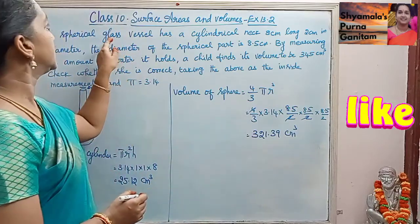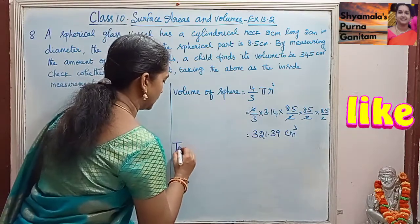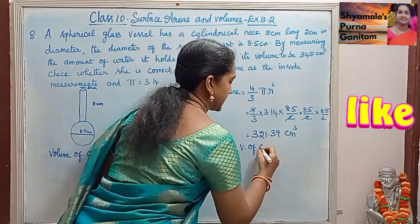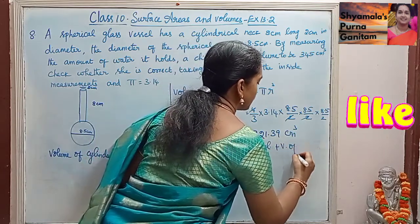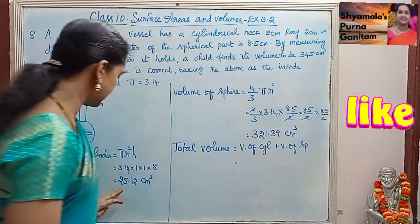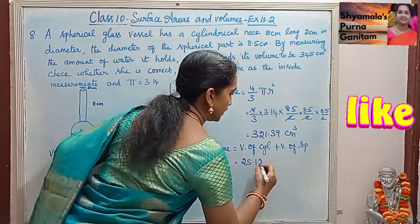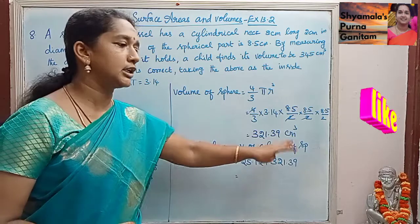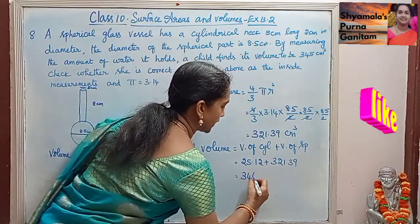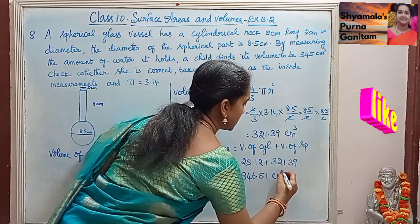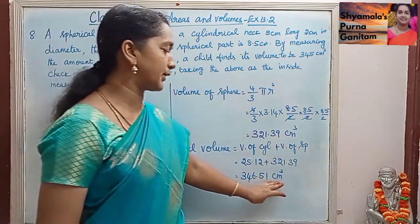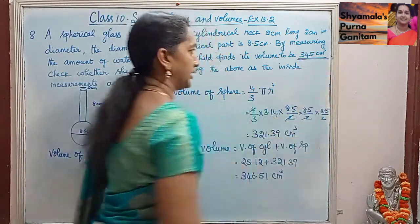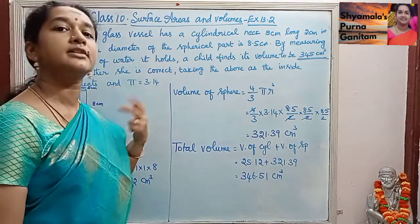Then total volume of the glass vessel. Total volume is equal to volume of cylinder plus volume of sphere. Volume of the cylinder is 25.12 and volume of sphere is 321.39. When we add these we get 346.51 cm cube. But the child finds it to be 345, so she is wrong.